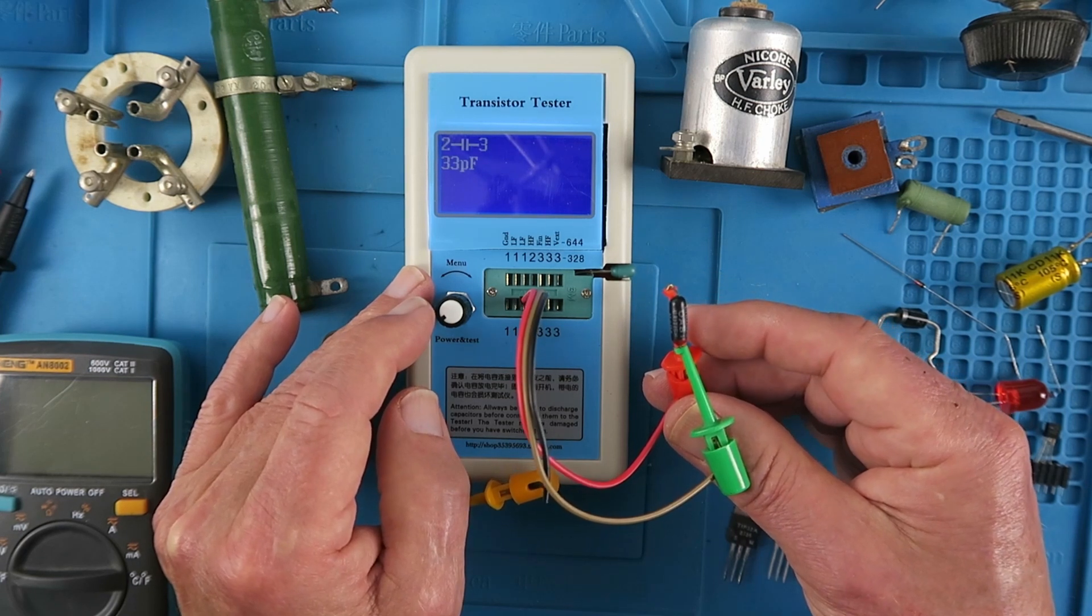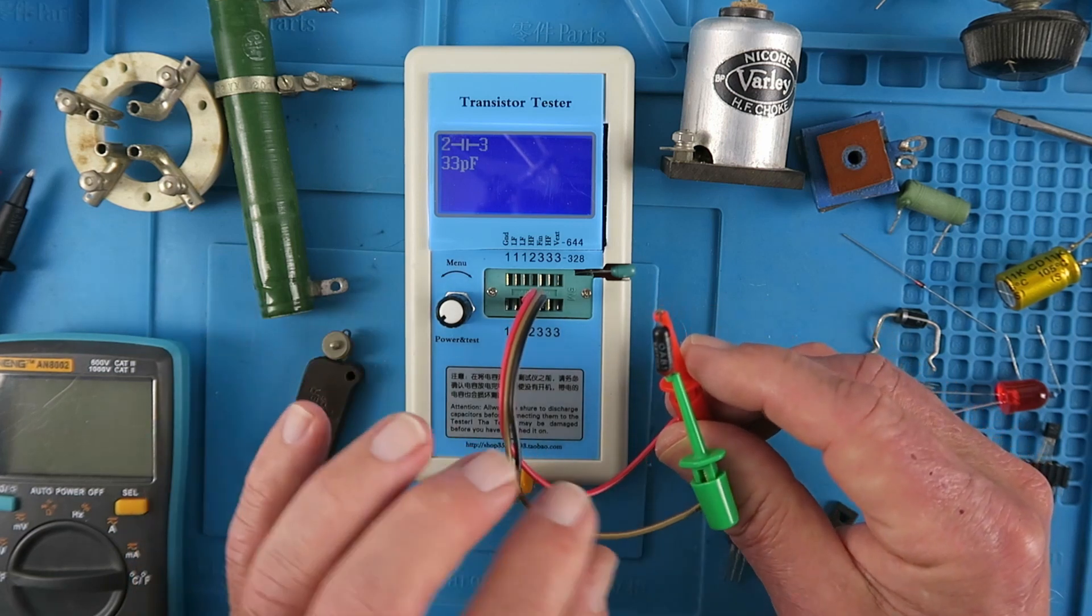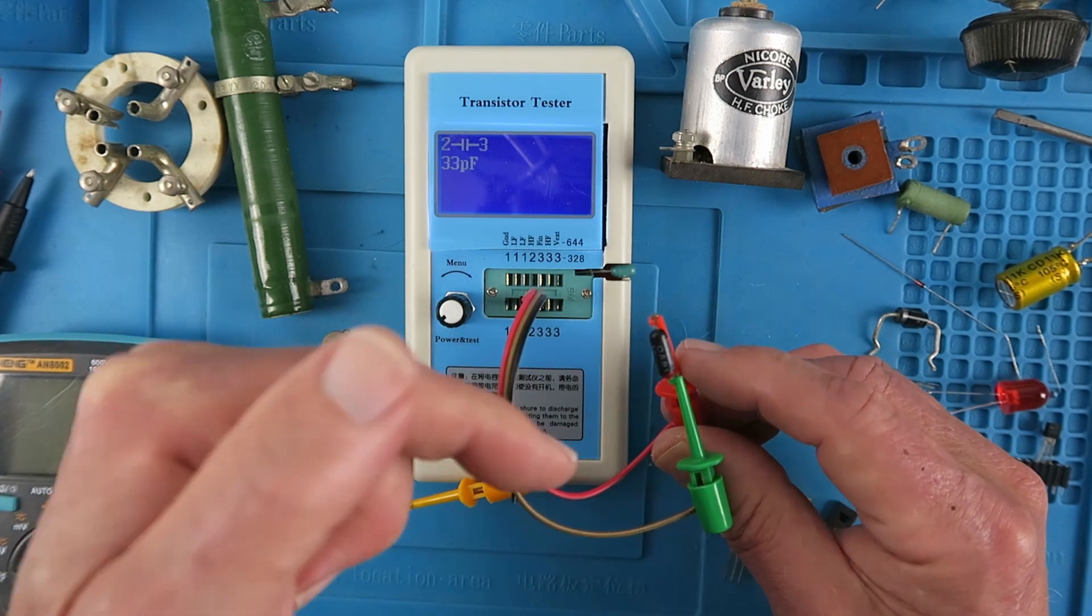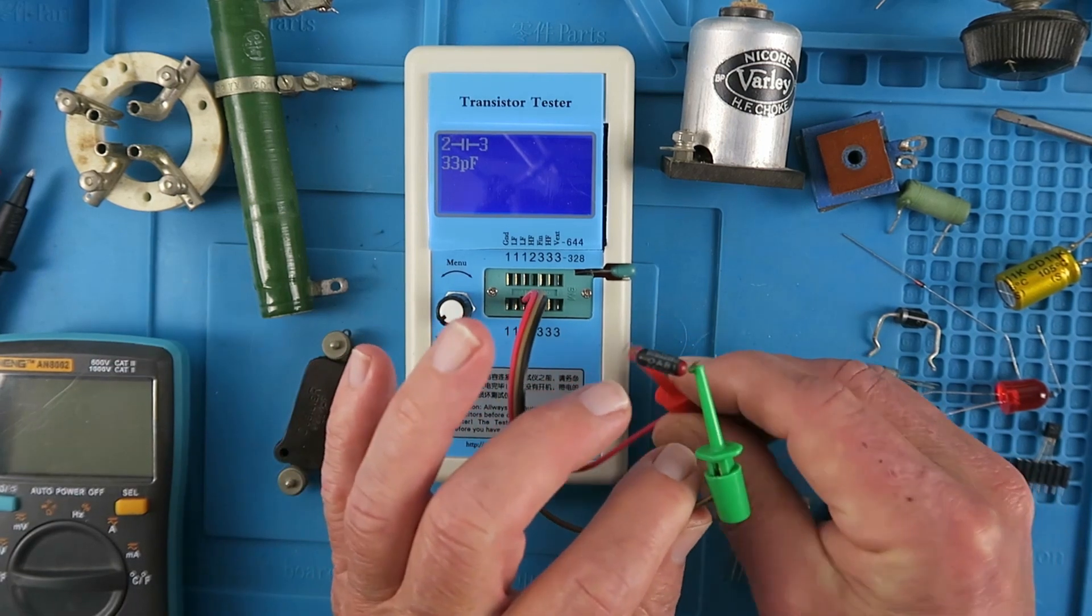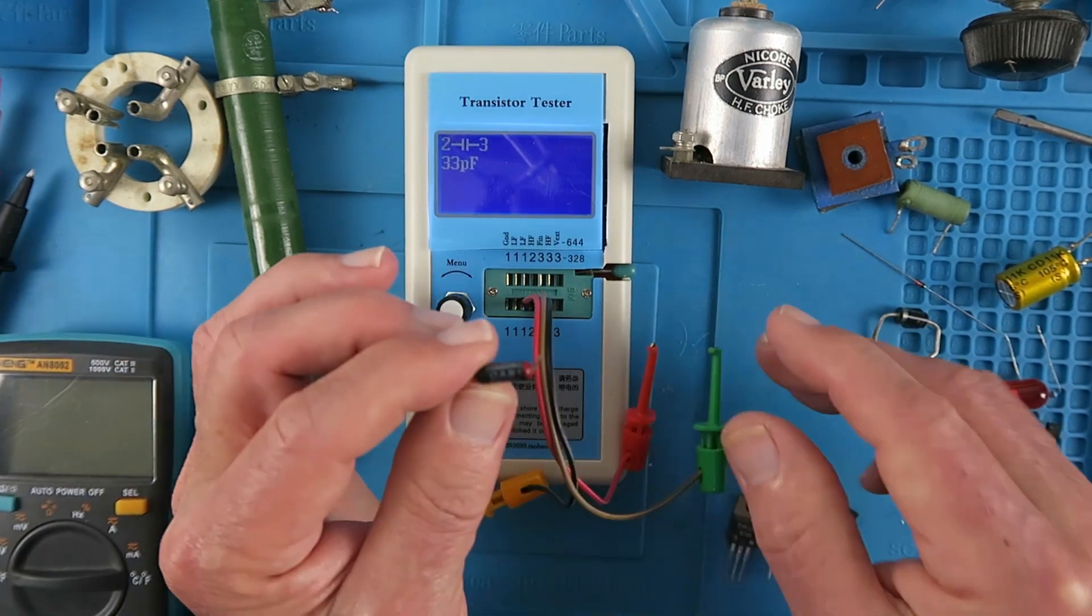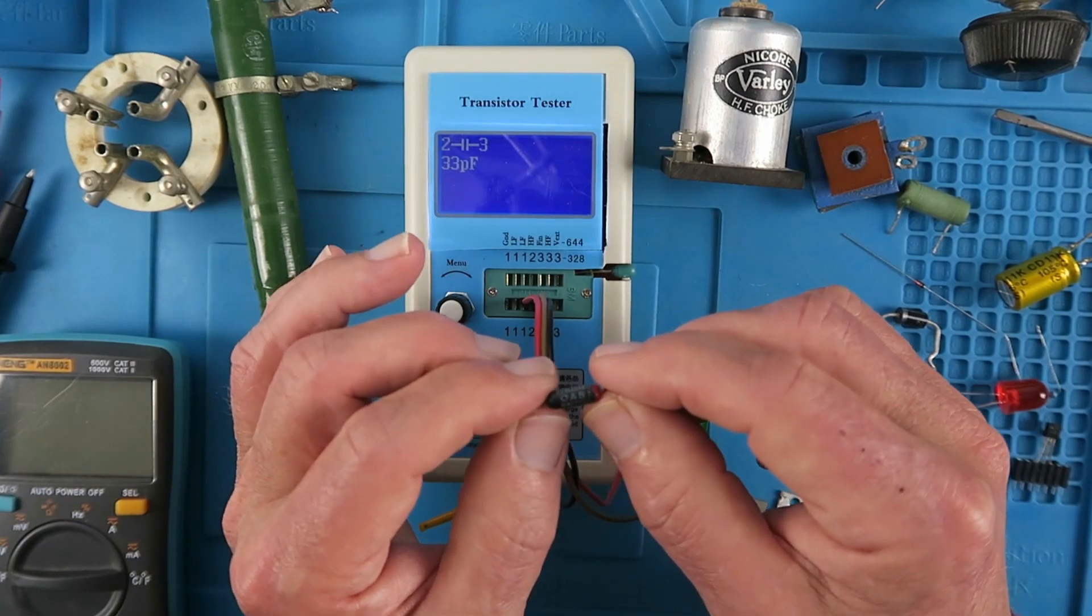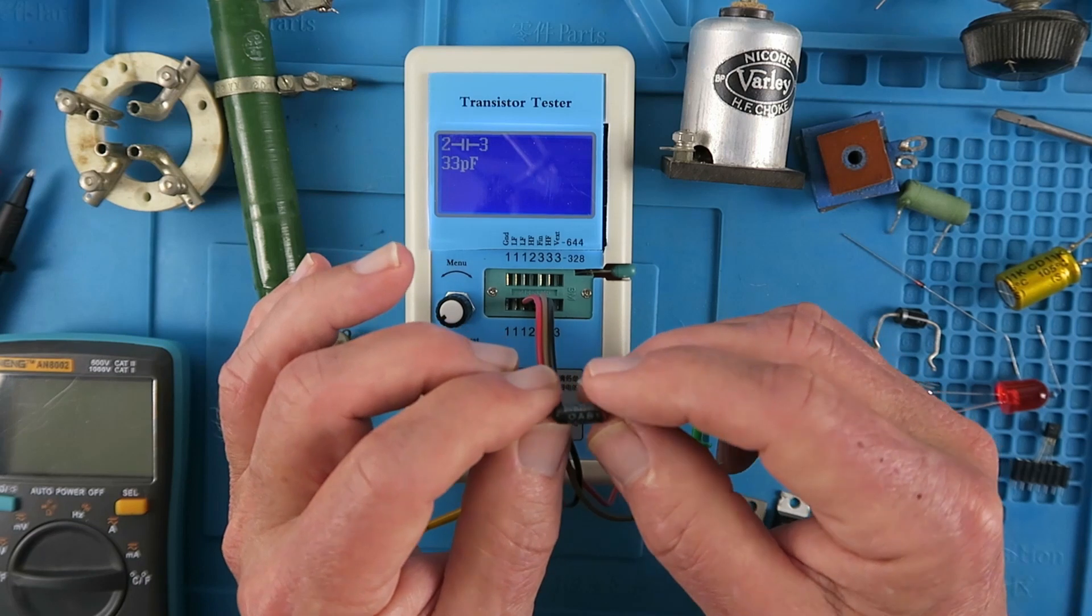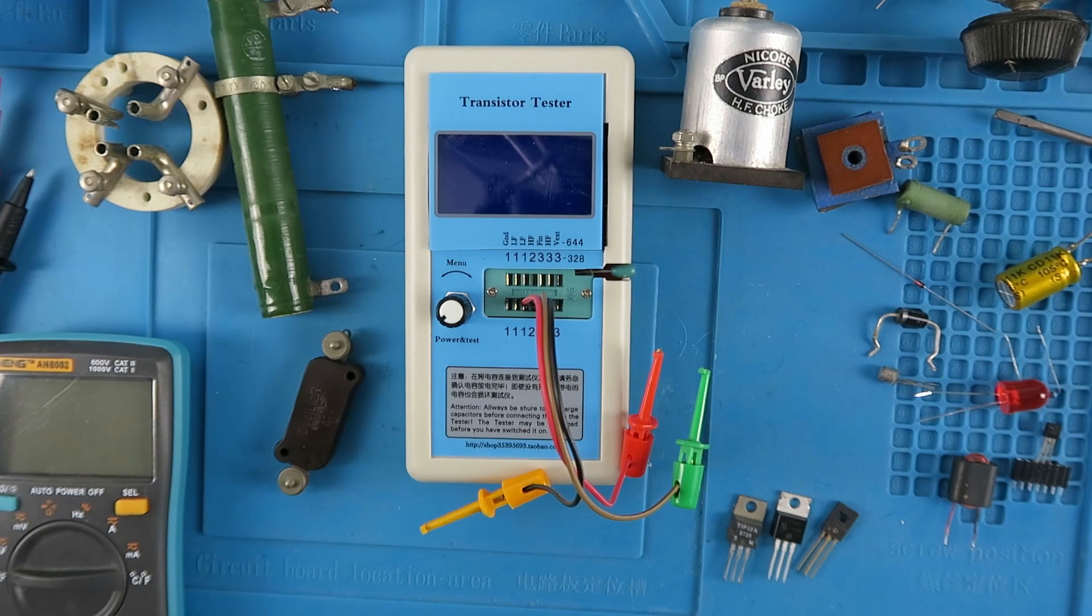It's just detected as a small capacitor there, 33 picofarads. Now this is mentioned in the documentation, so there'll be a link in the description to the release notes for this firmware. It does say that possibly it can be detected if it's cooled down. I don't have any freezer spray at the moment, so I'm just going to pop that into the freezer and we'll check it again a little later.